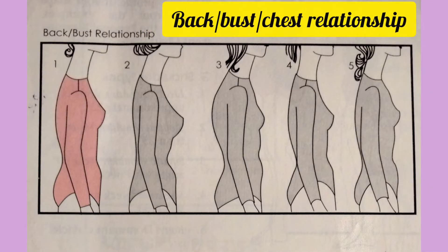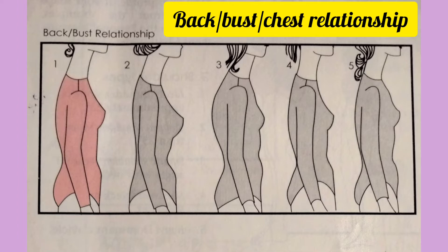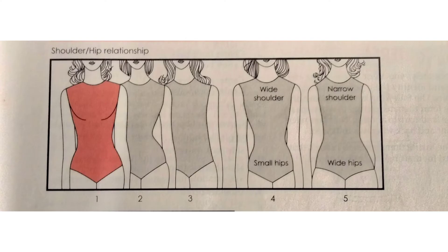Other figure variations that are very essential for body measurements are the back, bust, or chest relationship. The first model in the picture is ideal — the bust and buttocks protrude in a harmonious relationship. The second model has a narrow back and large bust. The third model has a full back and small bust. The fourth model has a hollow inward chest, while the fifth model has a pigeon or dominant chest bone.